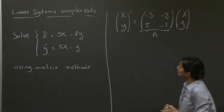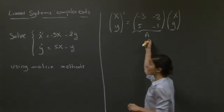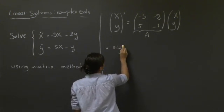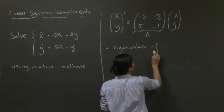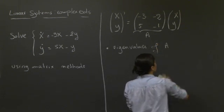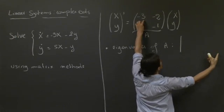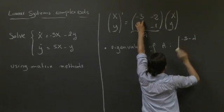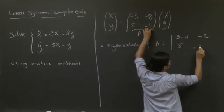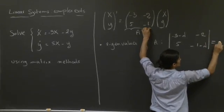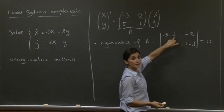So the first step in solving this system is to find the eigenvalues of the matrix A. So the eigenvalues of matrix A are basically the solutions to this following determinant equals to 0: minus 3 minus lambda, minus 2, 5, minus 1 minus lambda, determinant equals to 0. So here the lambda are the unknown eigenvalues.